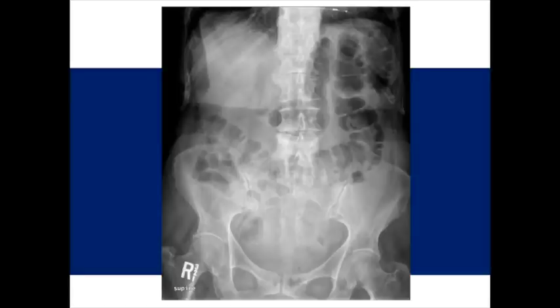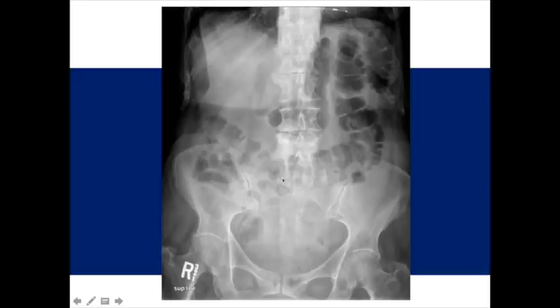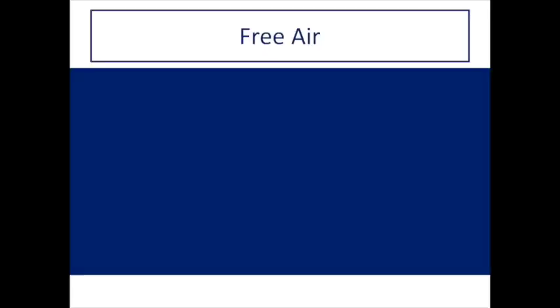Back to our case: if you were looking under the diaphragm, don't feel bad — it's a common mistake for beginners. The patient is supine on this film, which means that if there were free air, the air would come to the anterior belly and not under the diaphragm. Supine radiographs are not very sensitive for free air, and it's difficult to detect on supine films alone unless you have a very high volume of free air.